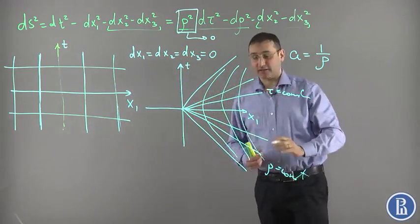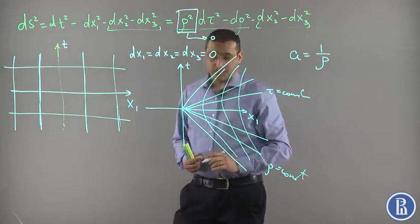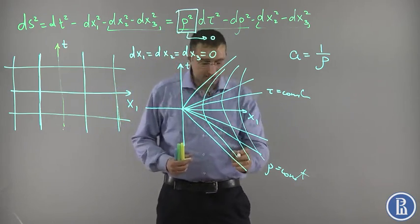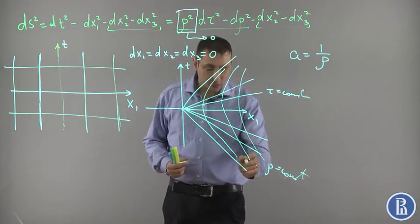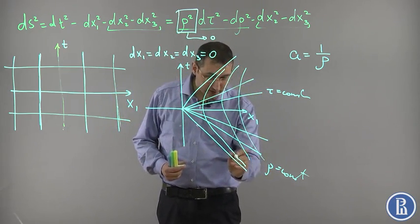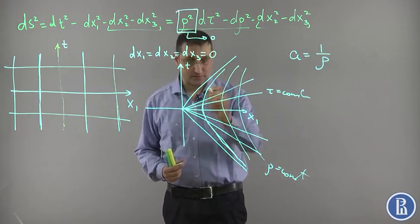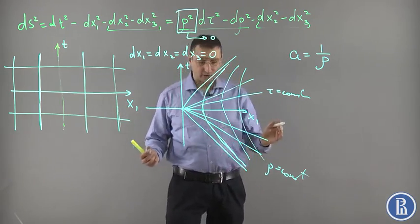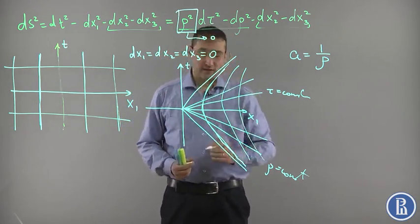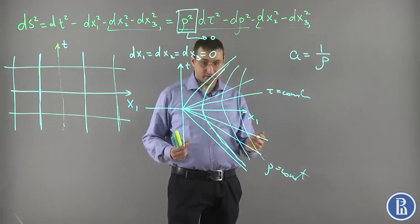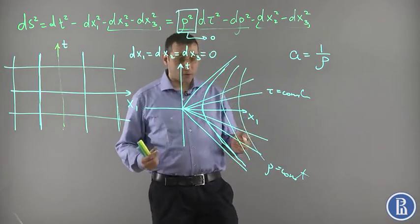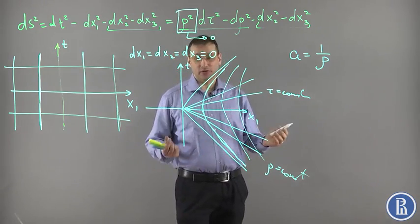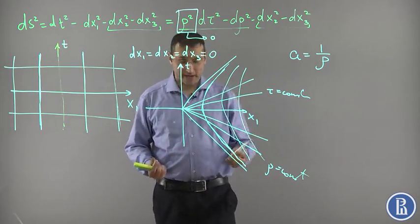To explain it, consider the following situation. First of all, I have to say that motion with constant eternal acceleration is impossible — physically impossible. Of course, no one can eternally accelerate because it demands infinite energy consumption.